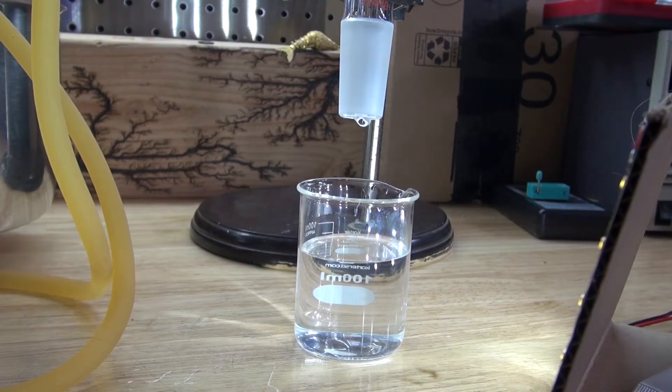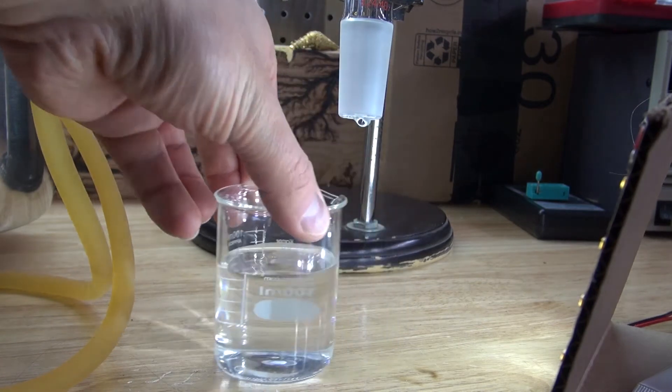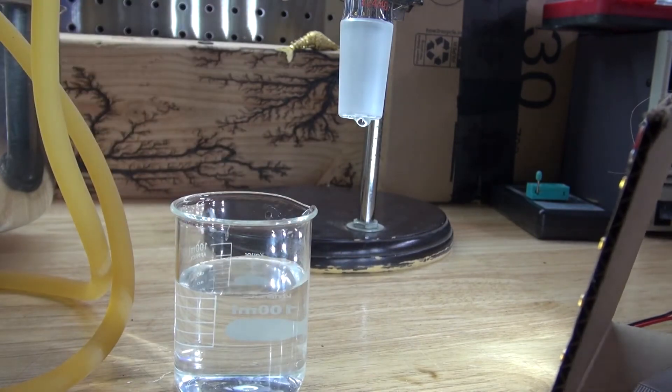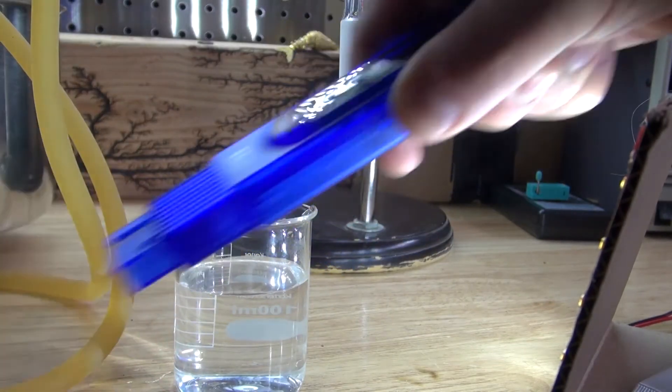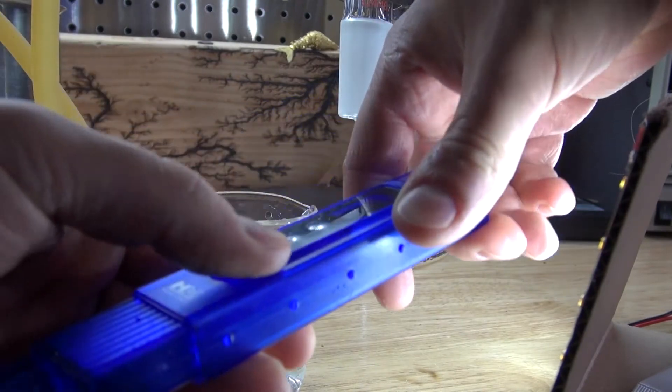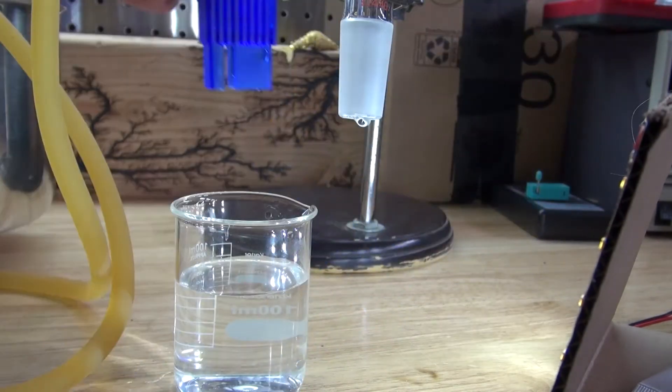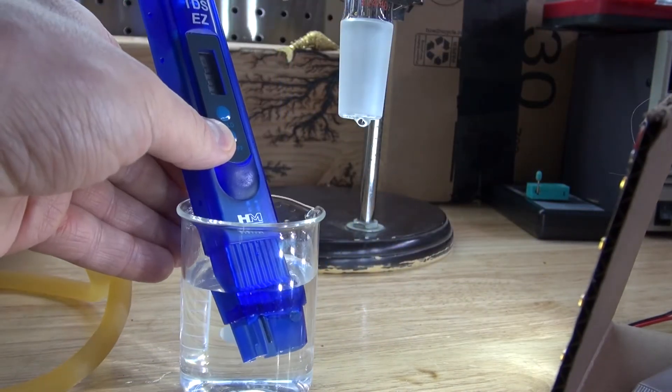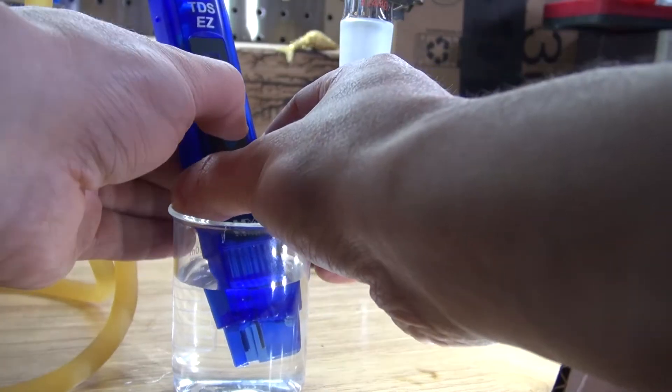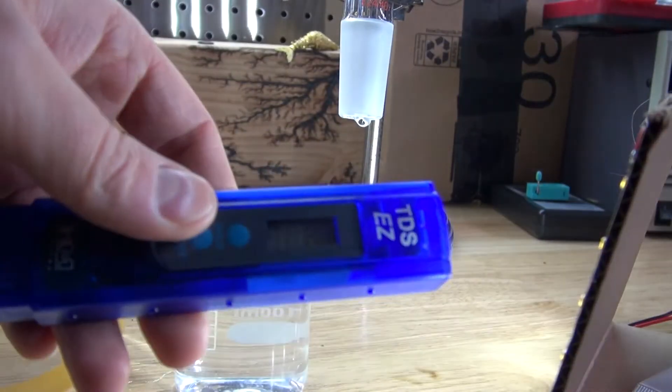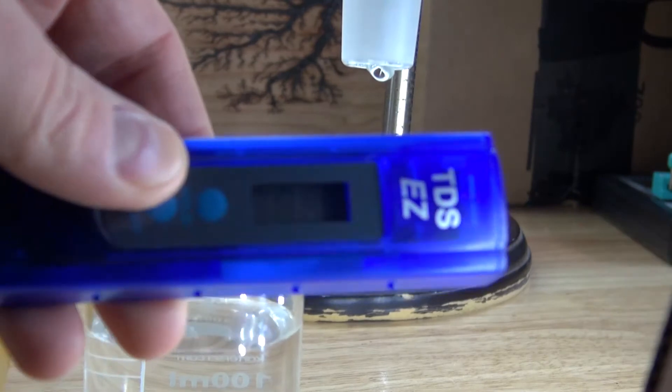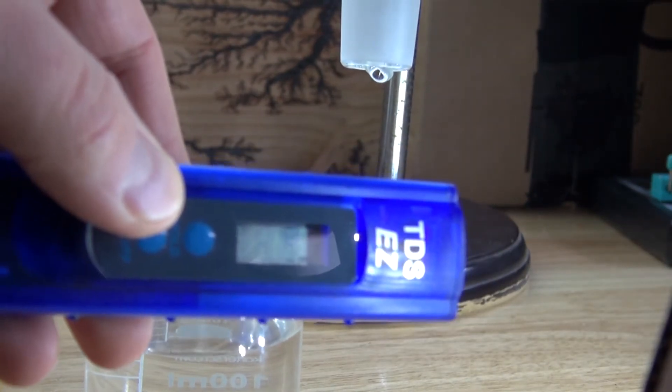30 minutes later my beaker is full and I've distilled all of the water. Now let's test it out and see how many total dissolved solids are in this. Take my TDS meter, turn it on, and let's test the water. And there we have it. It is now 2 parts per million. Big difference compared to 356.